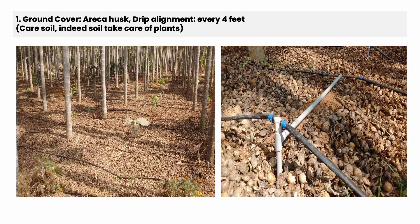Initially we started putting arecanut husk, which is a waste material in the arecanut-growing area. Almost 1 foot of arecanut husk was applied. And we started aligning the drip irrigation every 4 feet. Arecanut is a 9-by-9-feet crop, but we aligned it for 4 feet.